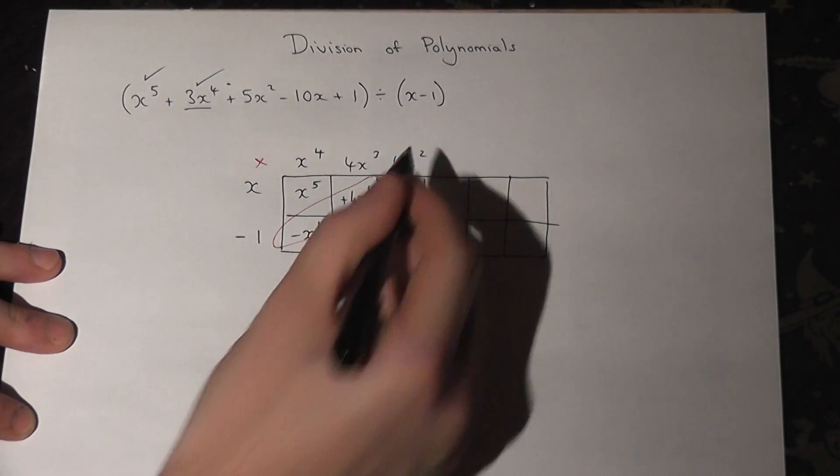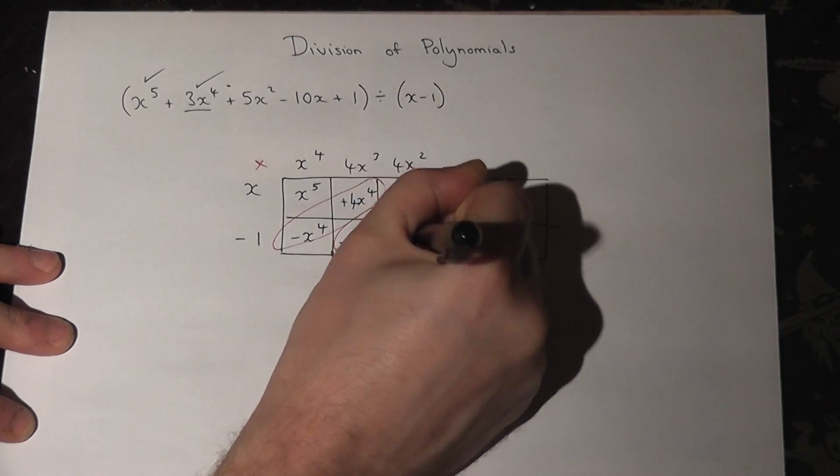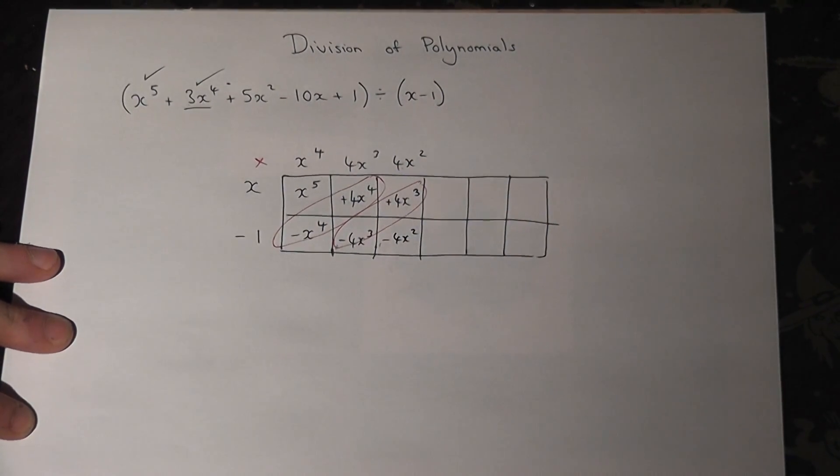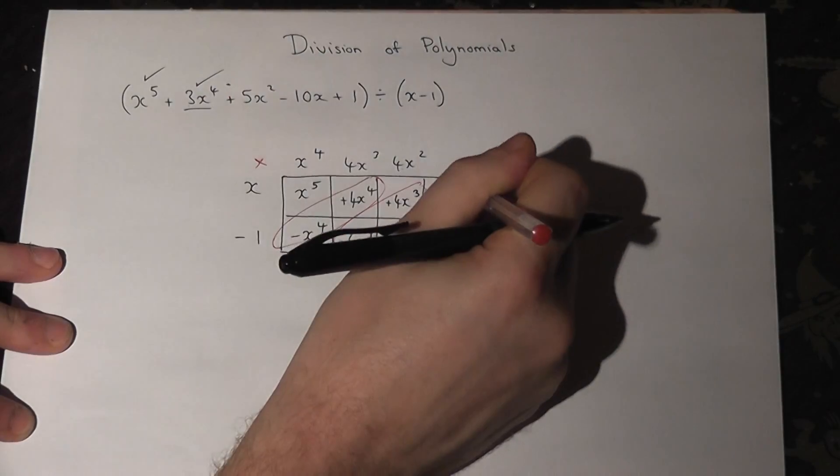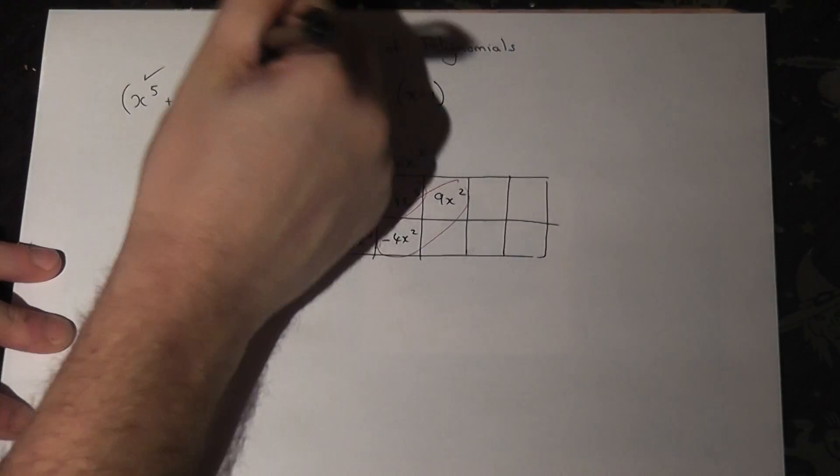But minus 1 times 4x squared is minus 4x squared. I need to have 5x squared, so I need another 9x squared, because this now gives us our x squared.